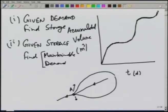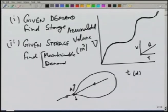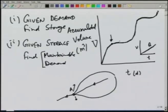Let us say the demand is volume V. We can plot the demand on the same scale — time versus volume. Let us first assume the demand is constant, so for maintaining a particular demand Q, it means we are withdrawing from storage at a constant rate; therefore, the demand curve will be a straight line. Let us assume this is the start of the dry period and the reservoir is full at this point, with the reservoir created here full at the start of the dry period.